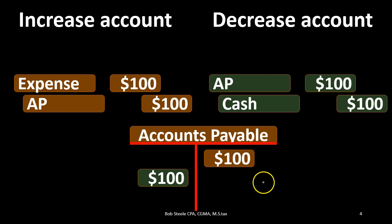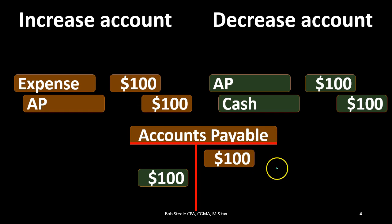In the T-account, accounts payable increases with a credit. It goes down when we pay cash — debit accounts payable. If accounts payable goes up overall, that means the credit side is winning: we recorded expenses that decreased net income, but cash was not yet paid. On a cash basis we shouldn't have taken that deduction, so we need to add it back — that's why an increase in accounts payable means we increase the cash flow.